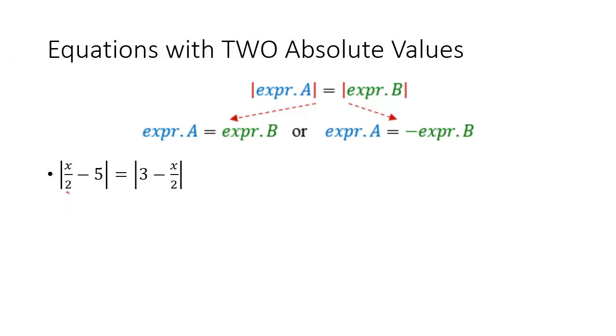So here, expression A is x over 2 minus 5, and it could be either equal to the positive version of the other side, or it could be equal to the negative version of the other side. And now you can solve these two equations.